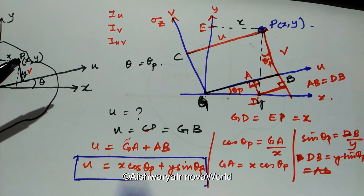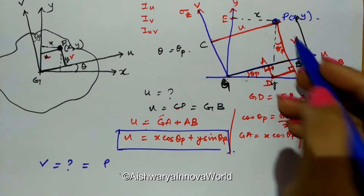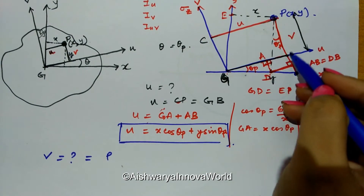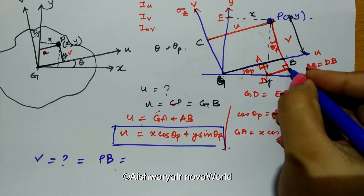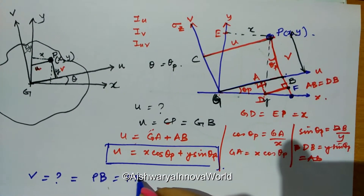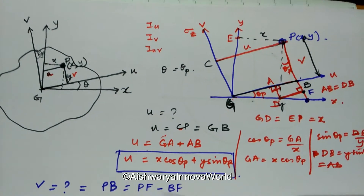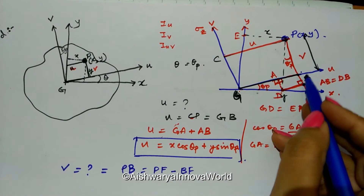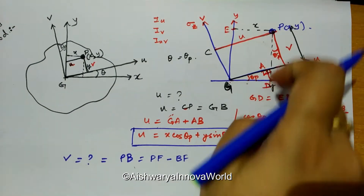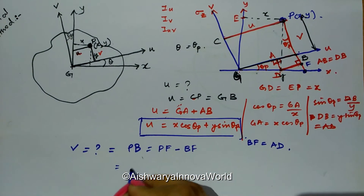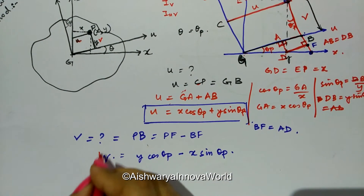Similarly, we find v. v equals PB, which can be written as PF minus BF. Using the same geometric triangles, and noting that BF equals AD, the final result is: v = y·cos(theta_p) - x·sin(theta_p).